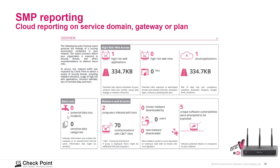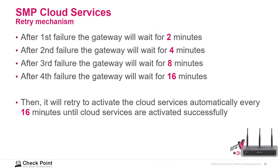The Security Management Portal has custom alerting enabled, so we can configure which alerts meet your requirements. There is cloud reporting at the service domain, gateway, or plan level. The SMP cloud services retry mechanism works as follows: after the first failure, gateways wait two minutes; after the second, four minutes; then eight; then sixteen minutes on the fourth attempt, after which it retries every sixteen minutes until cloud services are successfully activated.